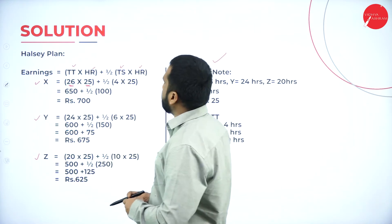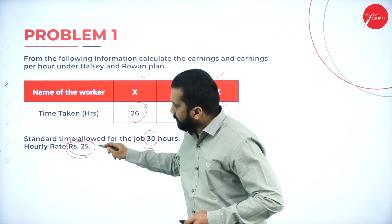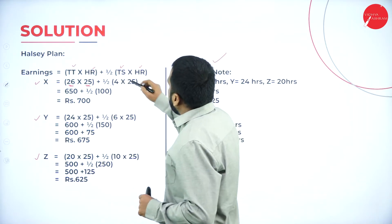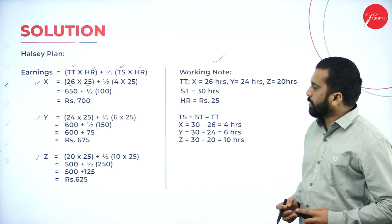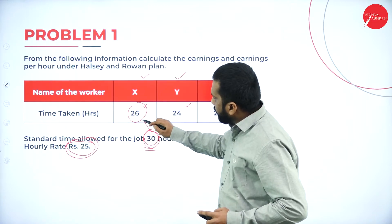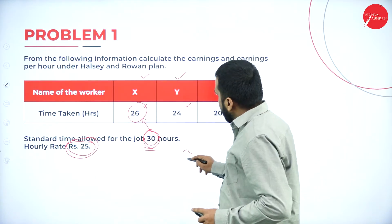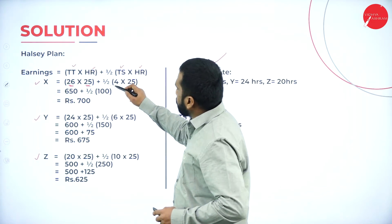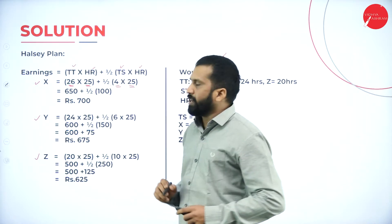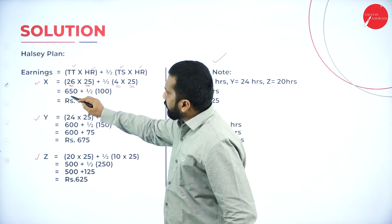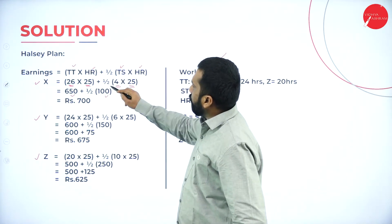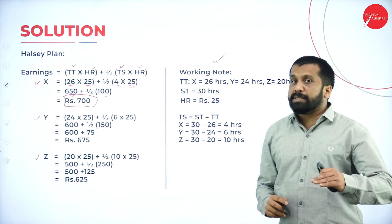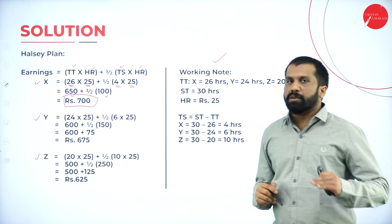The hourly rate is 25. So: 26 × 25 = 650. Time saved is 4 hours; 4 × 25 = 100, and half of 100 is 50. Therefore, 650 + 50 = 700. As per the Halsey Plan, the earning of X is 700. Whatever is done on the right side are working notes; whatever is on the left side are your answers.